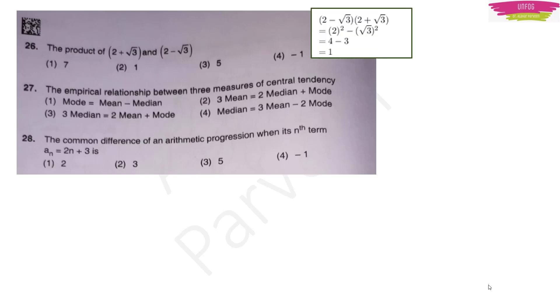Now the maths questions. The product of (2 + √3) and (2 − √3): this is in the form (a + b)(a − b) = a² − b². Here a = 2 and b = √3, so it becomes 2² − (√3)² = 4 − 3 = 1. Option 2 is the right answer.